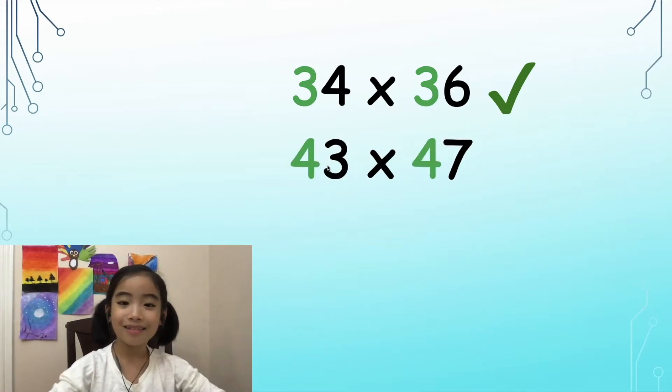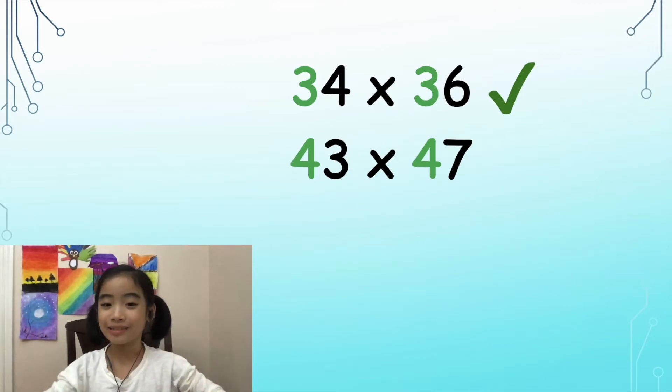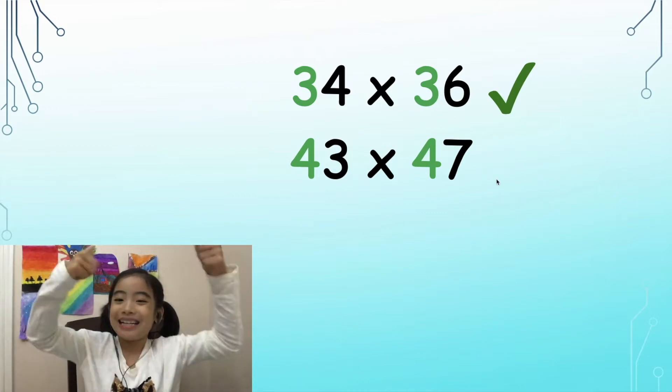Now, we have 43 times 47. So does the rule work for this? Well, 3 plus 7 equals 10 and 4 equals 4. So the rule does work for this example. So it's a yes!